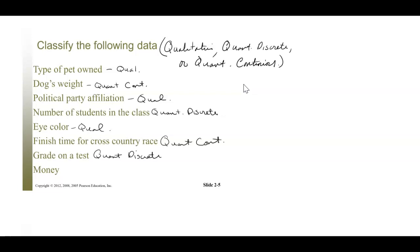A dog's weight is quantitative continuous because between say 9 pounds and 10 pounds, a dog's weight will fluctuate, and technically there are infinitely many numbers between 9 and 10 when you consider weight. You could get a weight down to 9.1256739 however many decimal points you choose. Political party affiliation is qualitative. Number of students in a class — we can count that — so that is quantitative discrete.